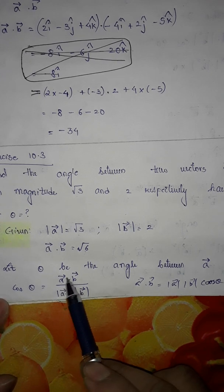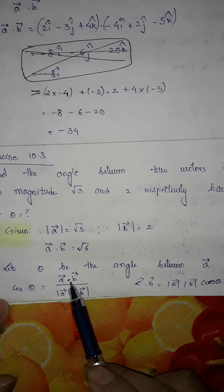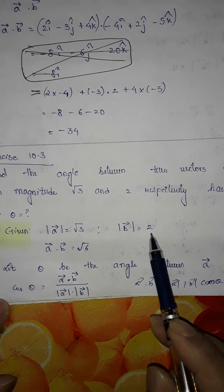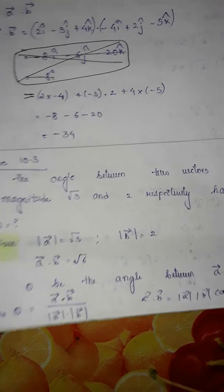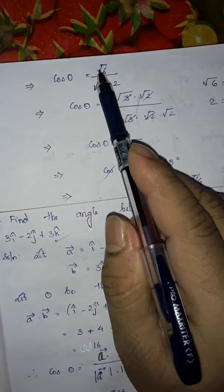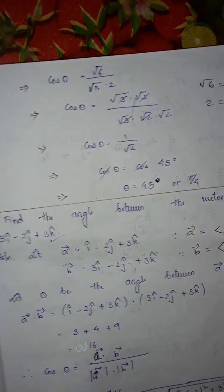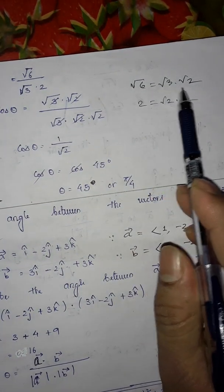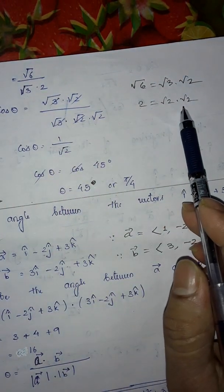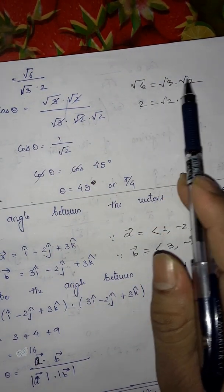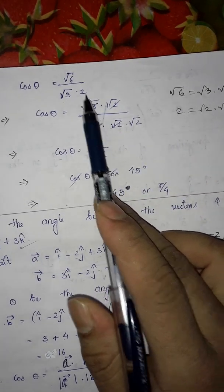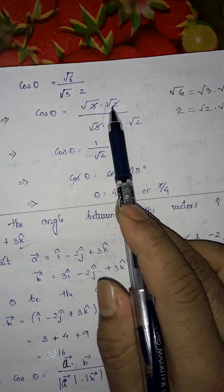Now in place of a·b, put √6. In place of magnitude of a, put √3, and magnitude of b is 2. So cos θ = √6 divided by √3 times 2. Write √6 as √3 times √2, and write 2 as √2 times √2, because √2 times √2 is 2 and √3 times √2 is √6. So in the numerator, √6 equals √3 times √2.